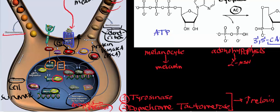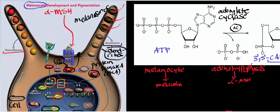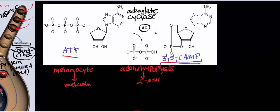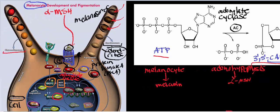To recap: alpha-melanocyte-stimulating hormone is synthesized by the anterior pituitary gland, or adenohypophysis, and sent through the blood to the melanocyte. Alpha-MSH binds to the alpha-MSH receptor called MC1R — a 7-transmembrane G-protein-coupled receptor. A G-protein activates adenylate cyclase, which catalyzes the conversion of ATP to 3'-5' cyclic AMP, giving you an increase in cyclic AMP.